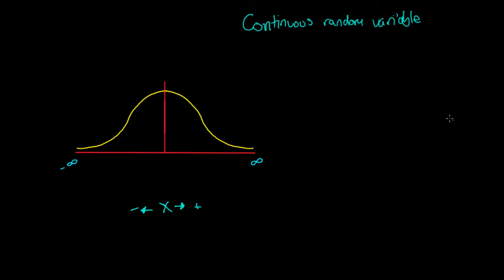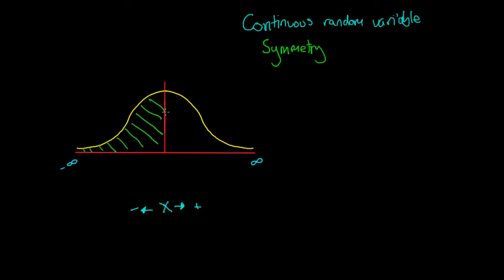We'll also notice that we have a very symmetrical looking normal distribution here. This line down the middle actually breaks up the normal into two sections, and each of these sections are the same. So if I were to fold one half onto the other, they'd be the same — this is the property of symmetry. The normal distribution, when it's normal, is symmetrical on both sides.